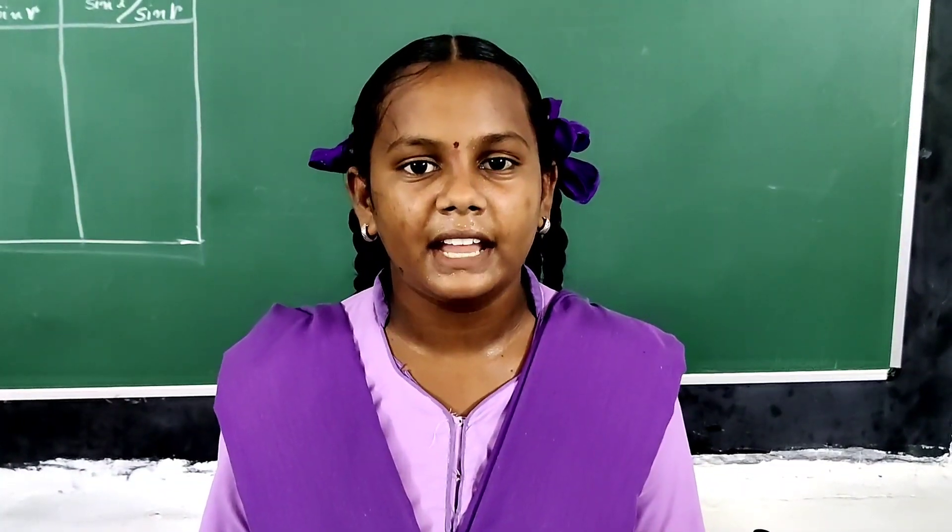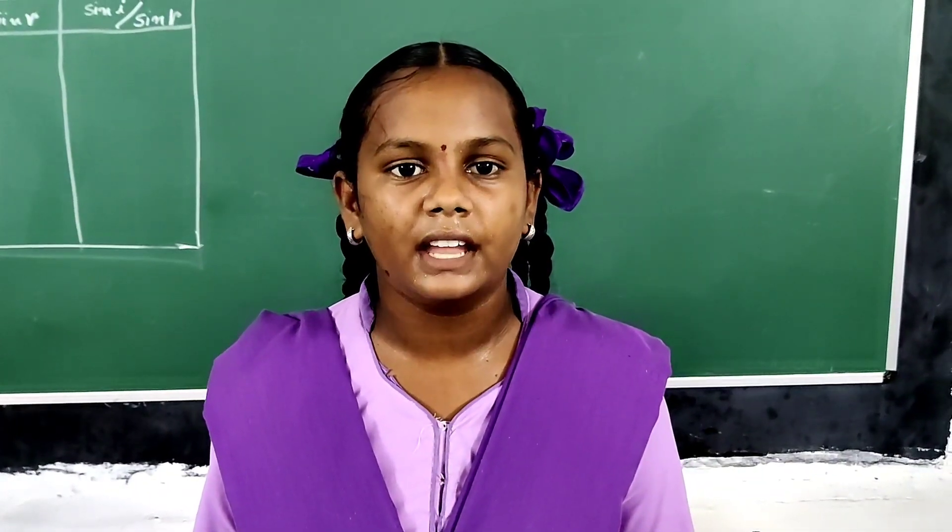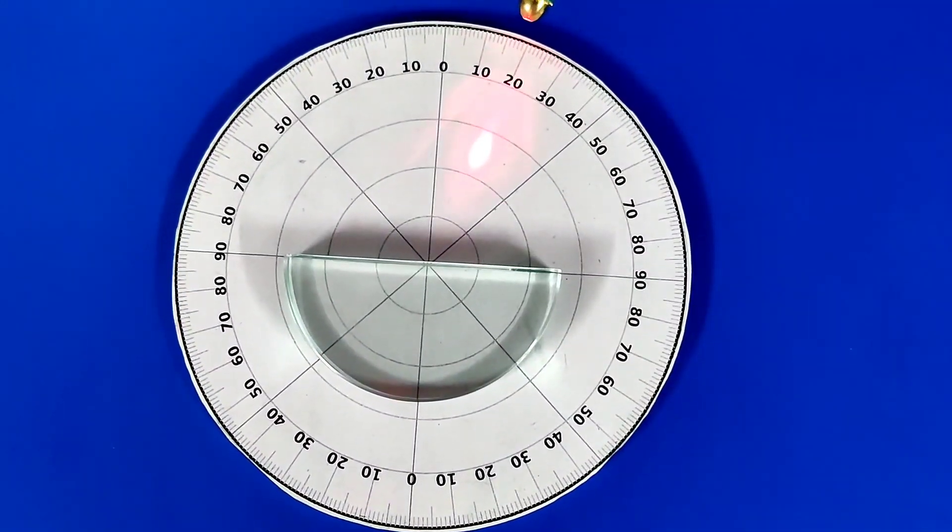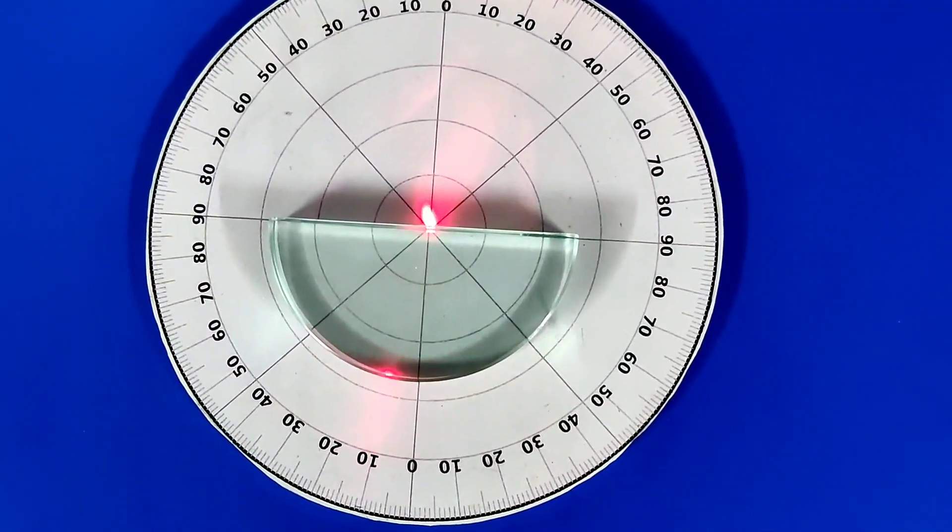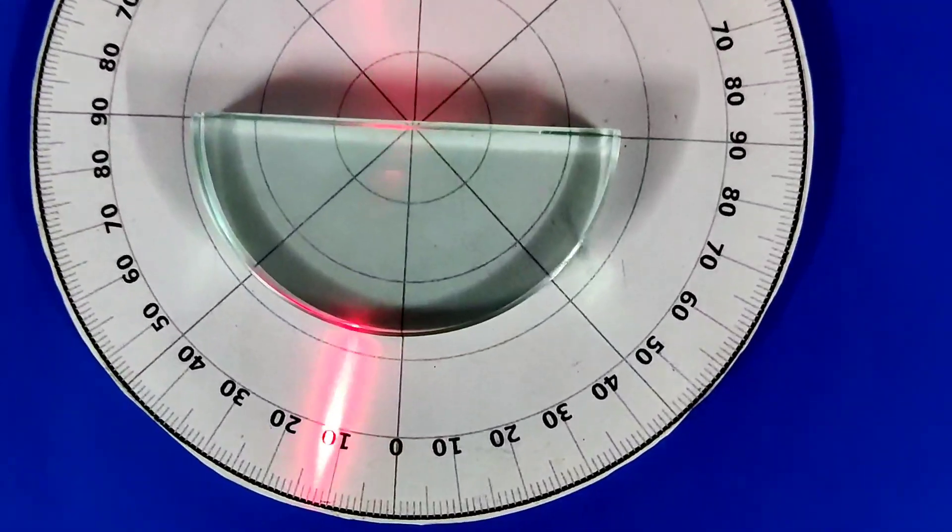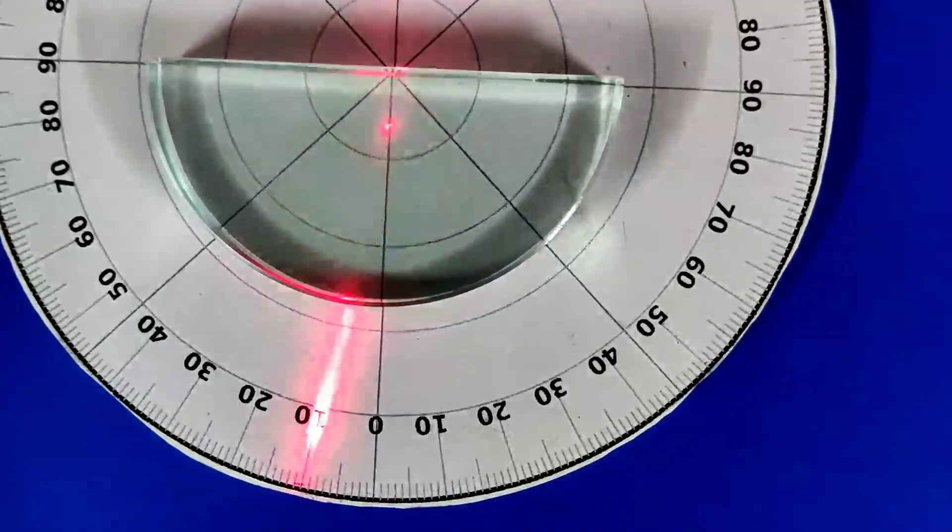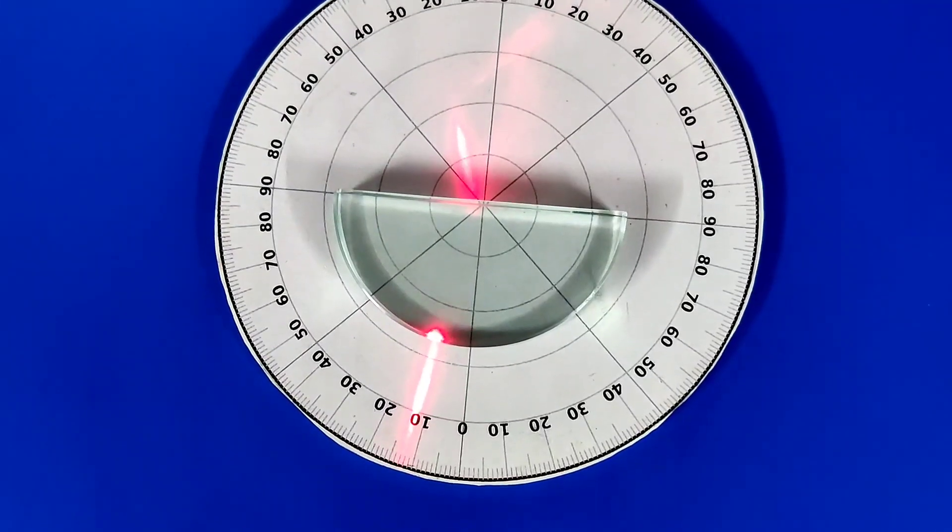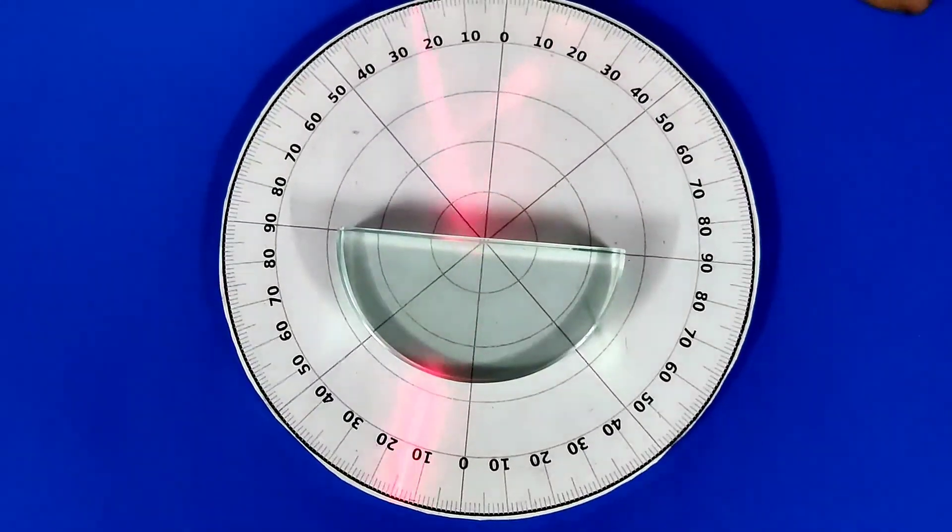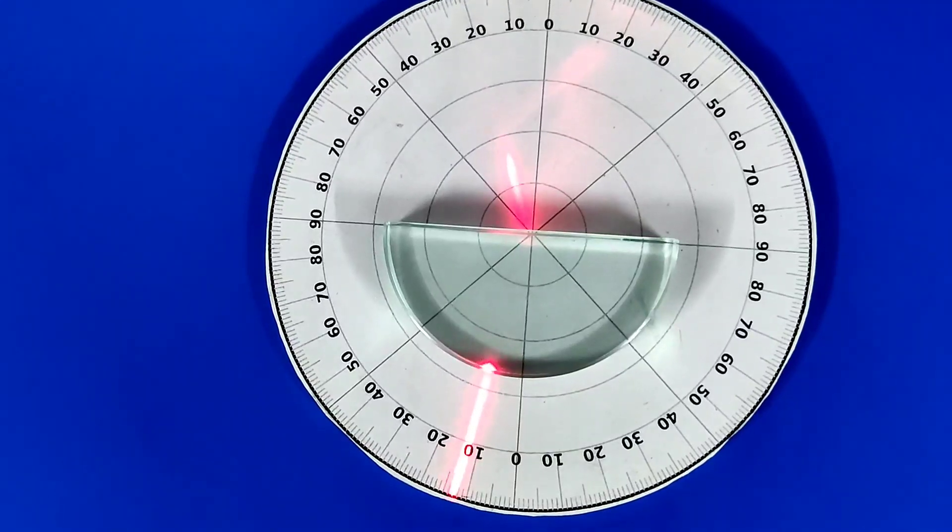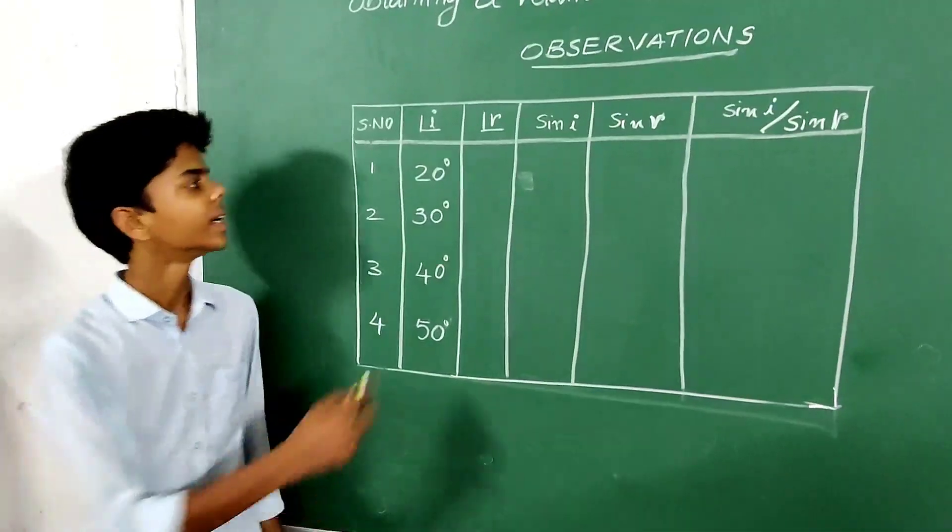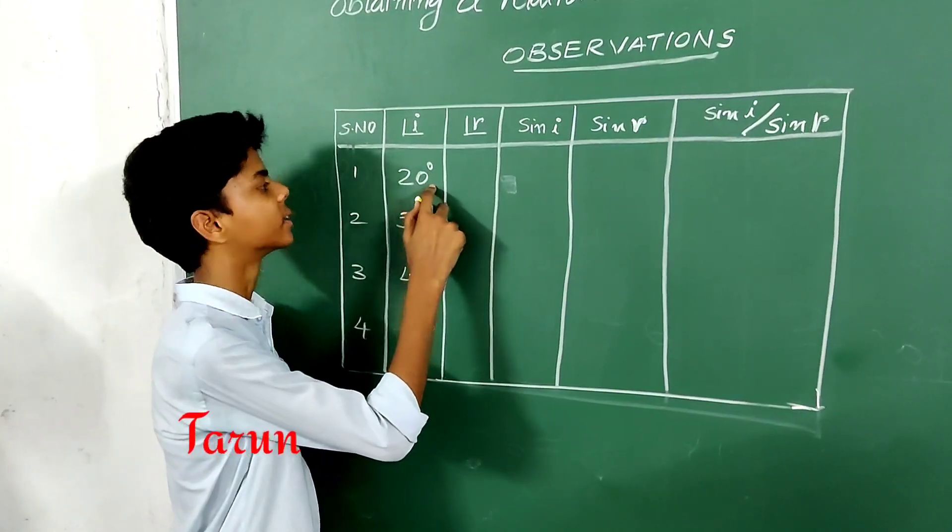First I find angle of refraction for angle of incidence 20 degrees. Angle of refraction equals to 14 degrees. Here angle of refraction for 20 degrees is 14 degrees.